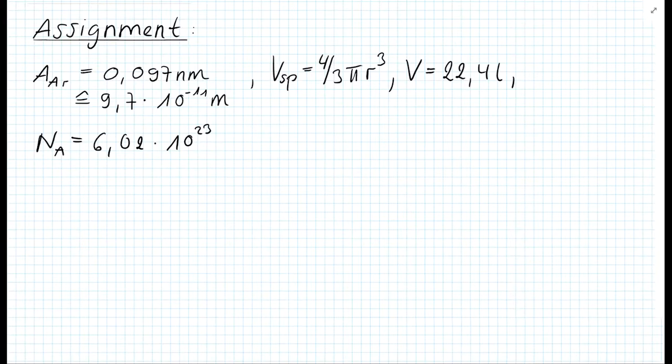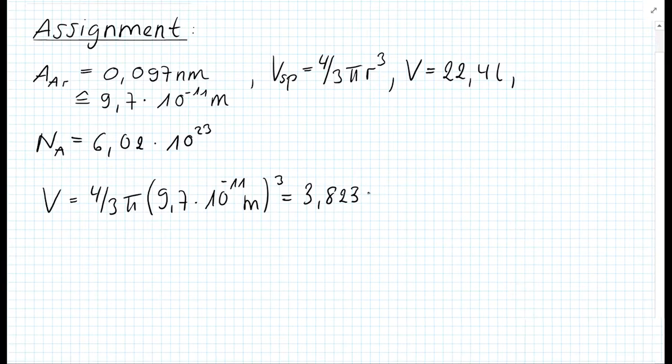This is something we can assume because we have standard conditions, as stated in the exercise. The first thing we want to do is to calculate the volume of an argon atom. We take the volume of our sphere, which is 4/3 π, and put in the atomic radius of argon in meters. This equals 3.823 × 10⁻³⁰ cubic meters. This is the volume of our argon atom.